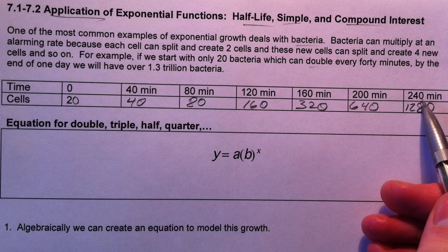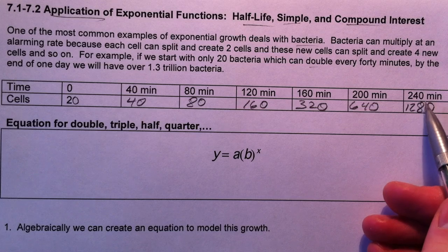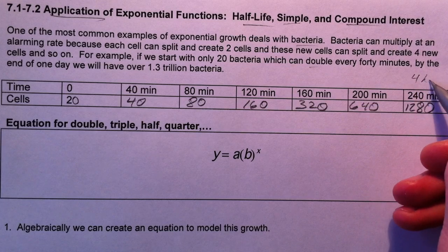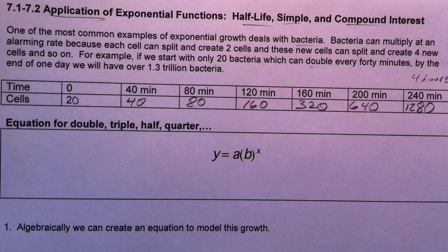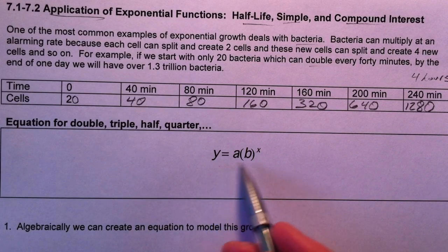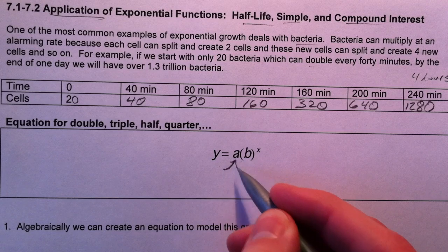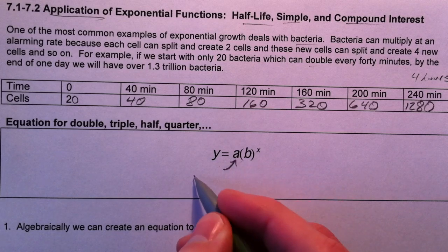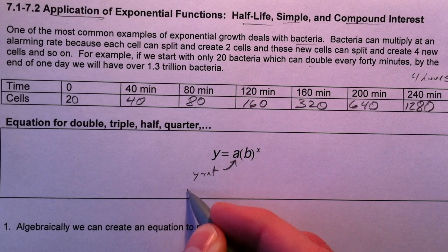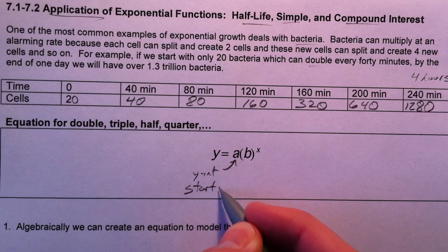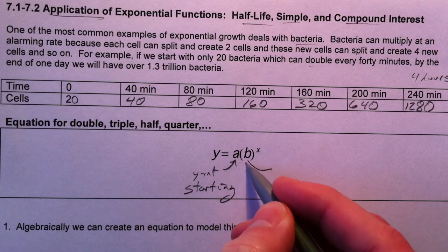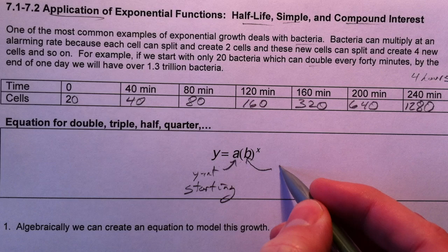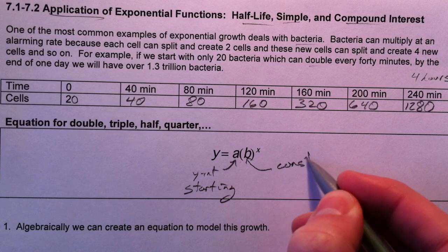That's just after 240 minutes — divide by 60, that's 4 hours. Recall from last time the basic exponential equation where the A value is the y-intercept or starting value, and B is the constant multiplier.